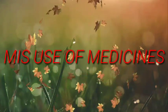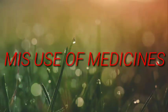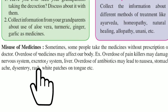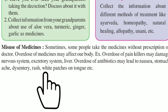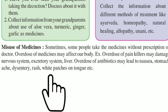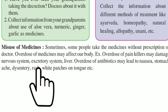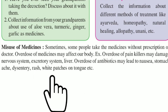Let us see the misuse of medicines. Sometimes people take medicines without a doctor's prescription. Overdose of medicines may affect our body. For example, overdose of painkillers may damage the nervous system, excretion system, and liver. Overdose of antibiotics may lead to nausea, stomach ache, dysentery, rash, white patches, and other effects.